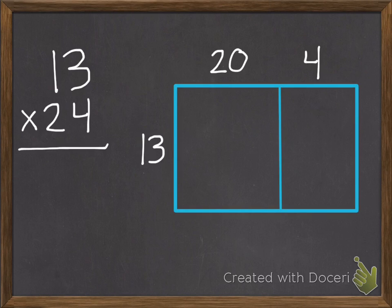For now, we're going to use what we learned in our past lesson to break apart one of our two numbers. So I used the distributive property to break apart 24 into 20 and 4, and the 13 I left alone.